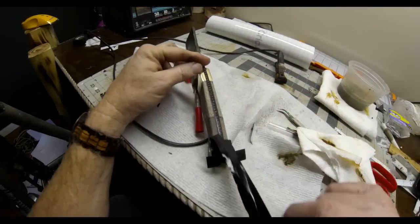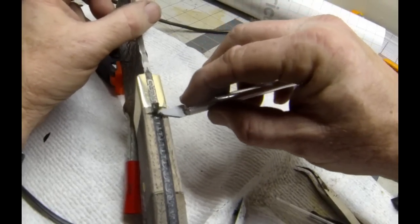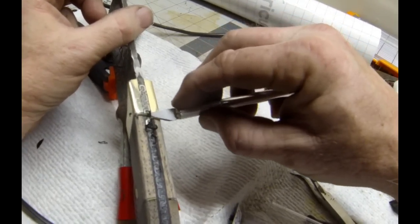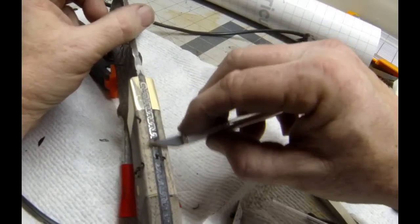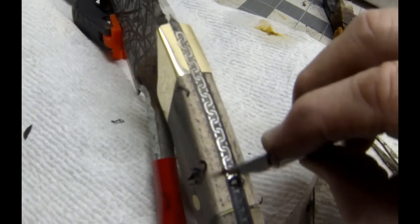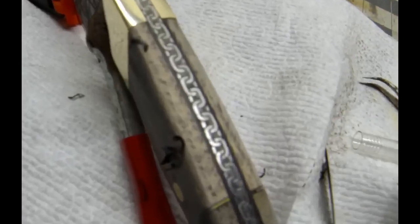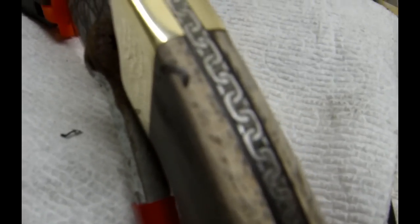And then you can peel that vinyl right off of the knife. You can use your fingernail. On this particular blade, I'm just using a razor knife. And when the vinyl comes off, you'll see the etching. You can clean up that etching a little bit with a little 400-grit emery. Just polish it up. It'll polish the high spots.